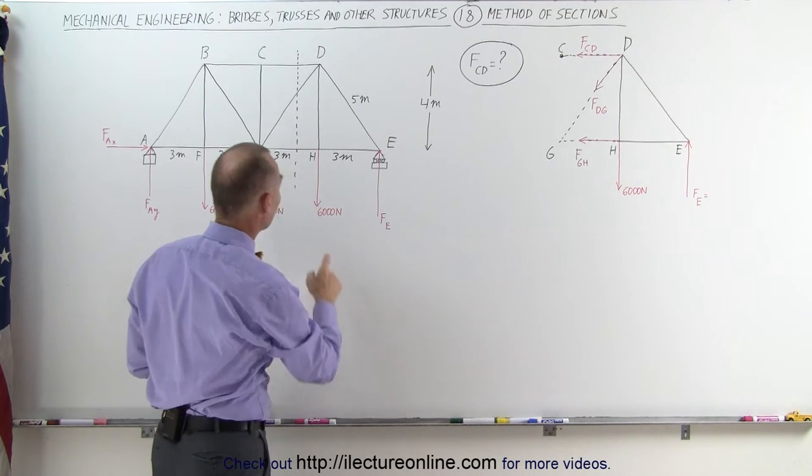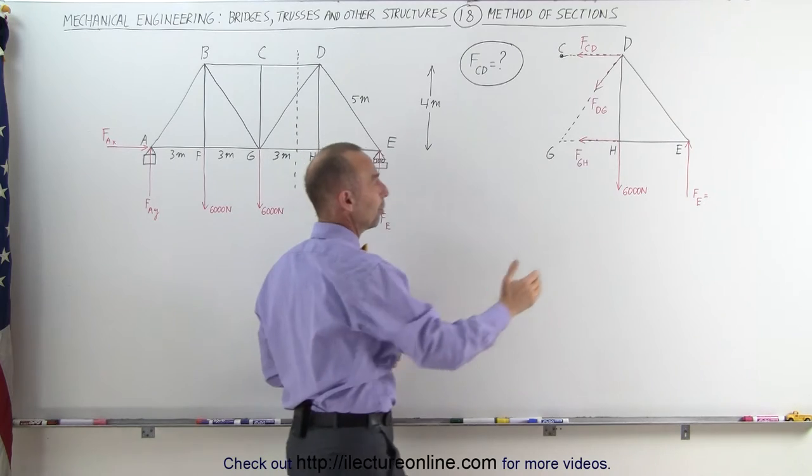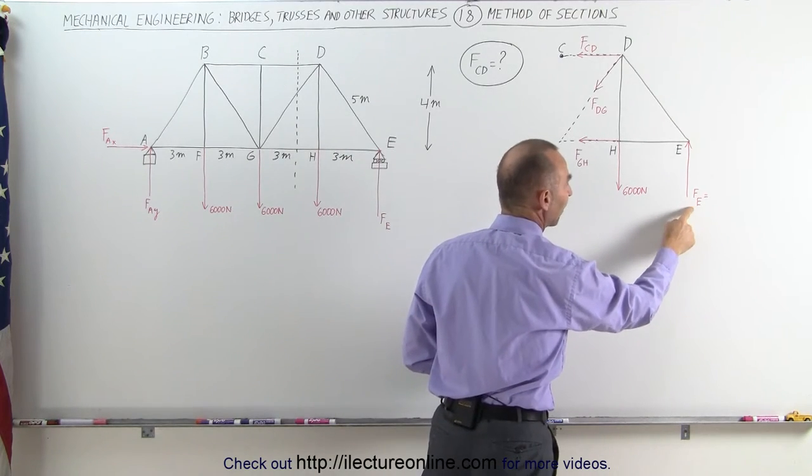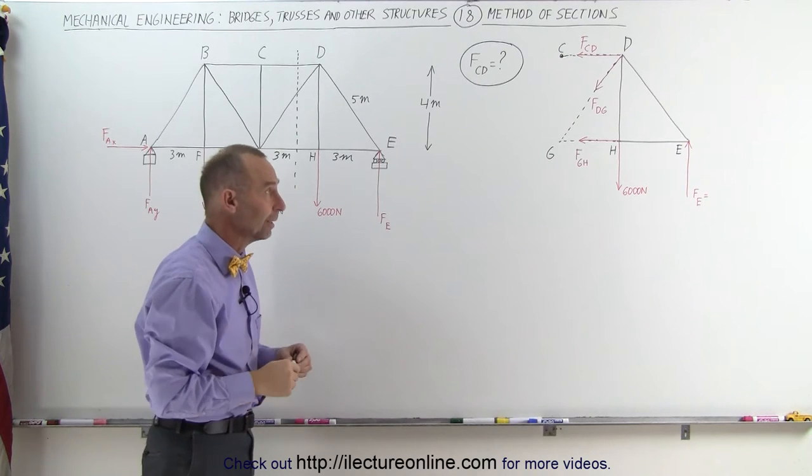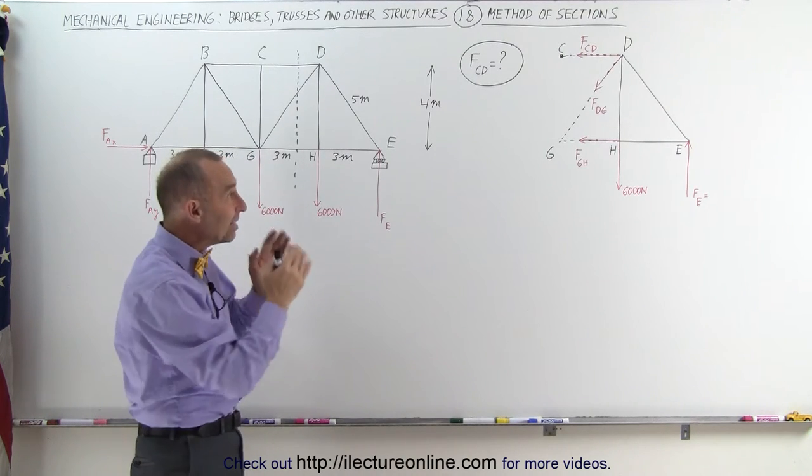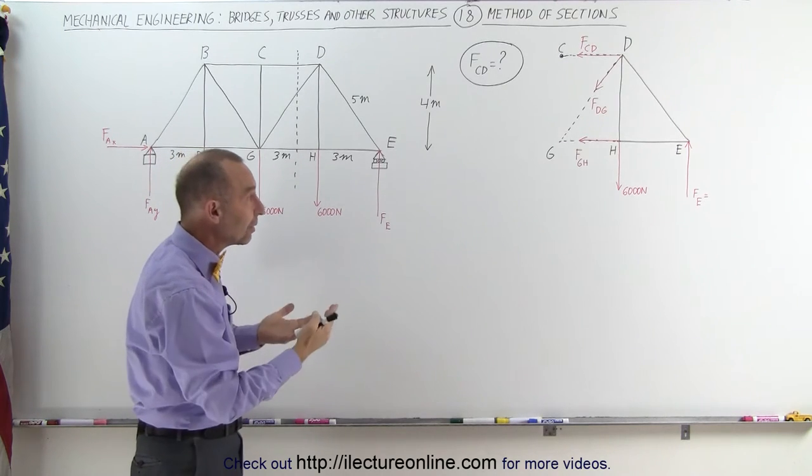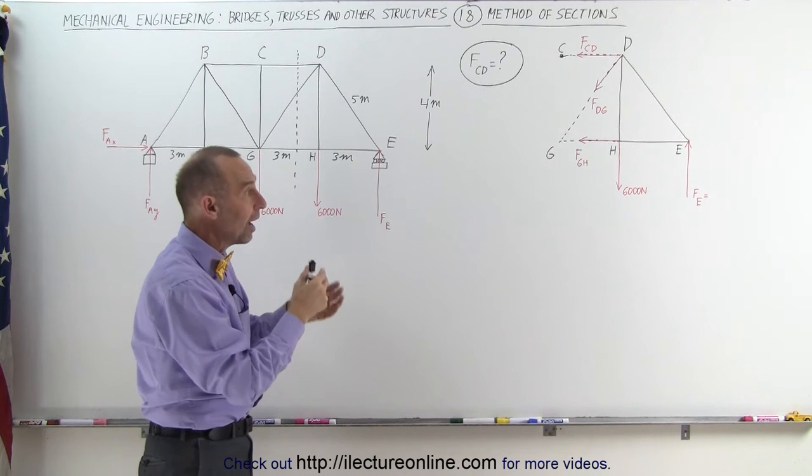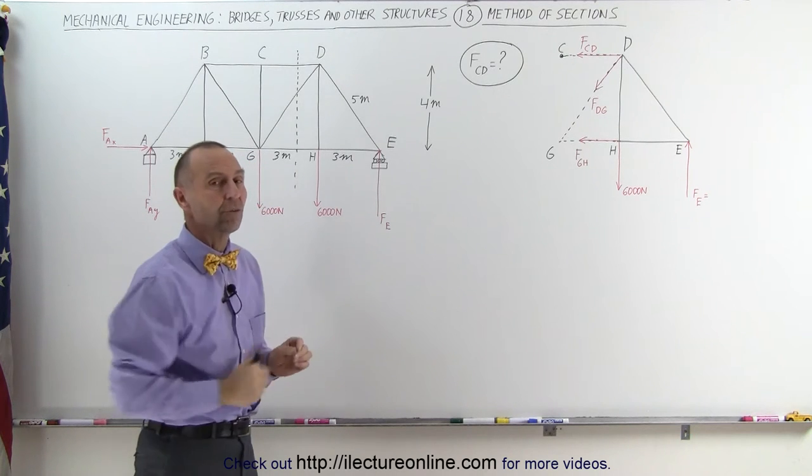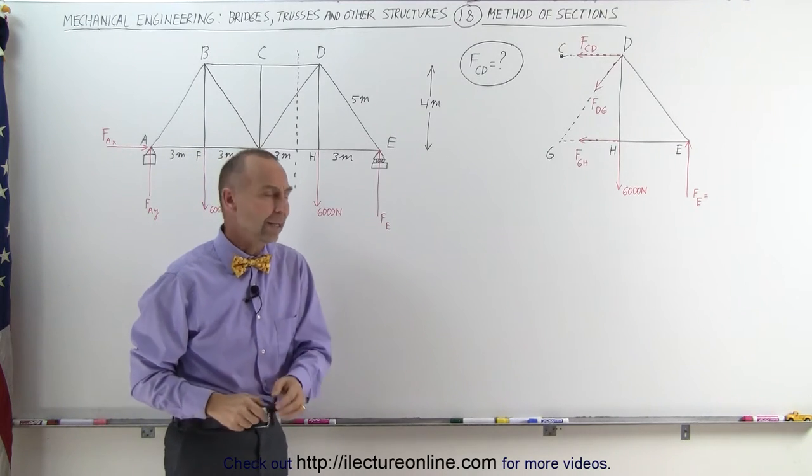Then also there's some existing forces. We have a 6,000 Newton load right here at H and there'll be a supporting force right here called F sub E at point E. We don't know yet what that is. We'll still have to calculate it. But you can actually take any section of the bridge and then use the sum of the forces in the X direction, the sum of the force in the Y direction, and the sum of the torques or moments about any point on the bridge to find individual members or the forces on individual members. So let's go ahead and show you how that works.